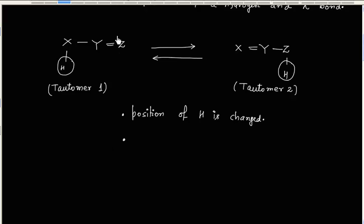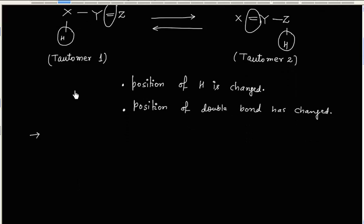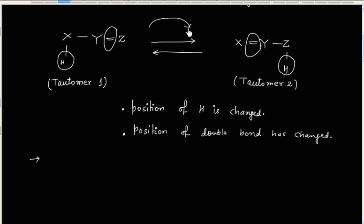You can also see the position of the double bond. Initially we have a double bond between the Y and Z atoms, and then we have a double bond between the X and Y atoms, so the position of the double bond has changed. Another important point about tautomerism is that tautomers exist in dynamic equilibrium — tautomer 1 is converting into tautomer 2, and tautomer 2 is converting into tautomer 1.